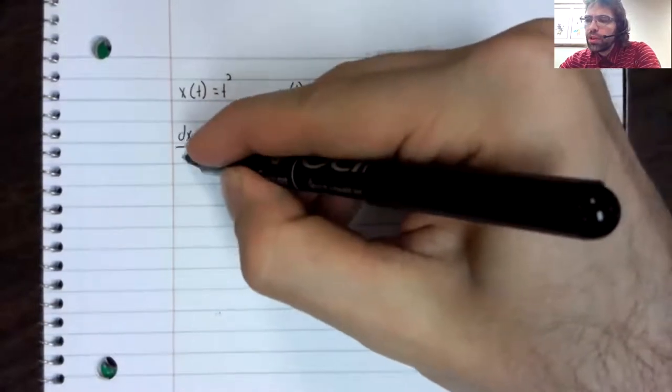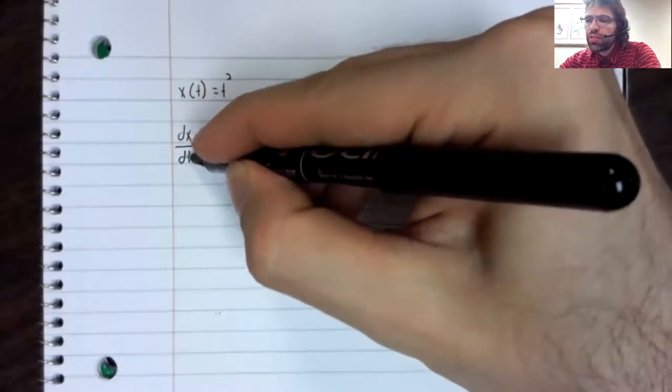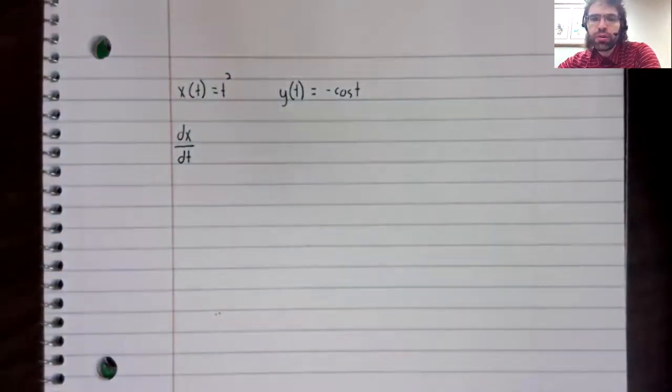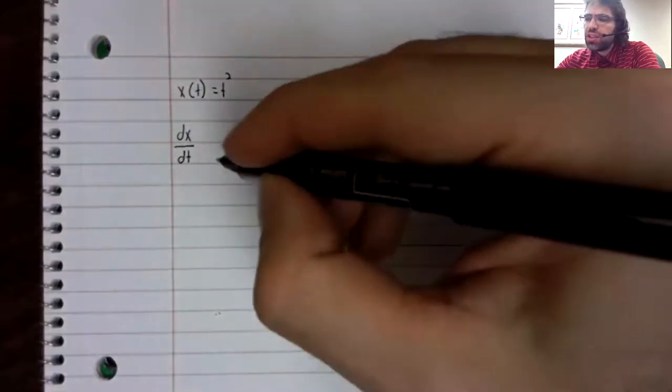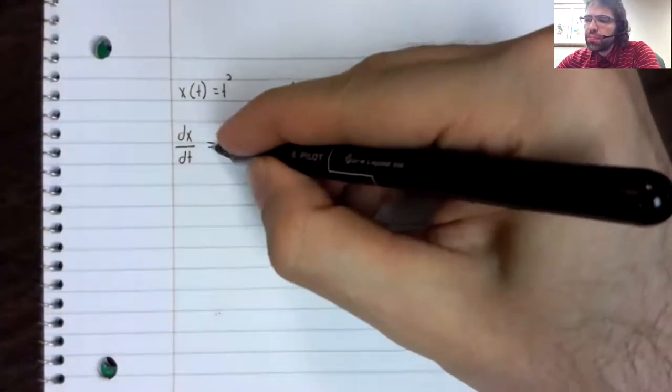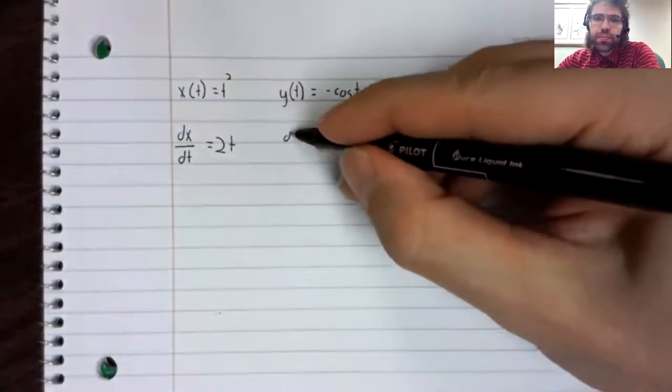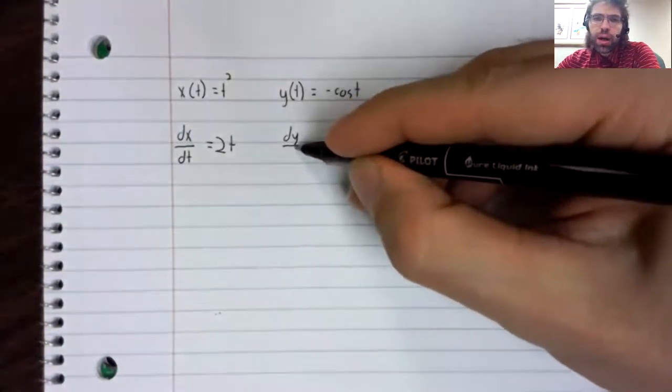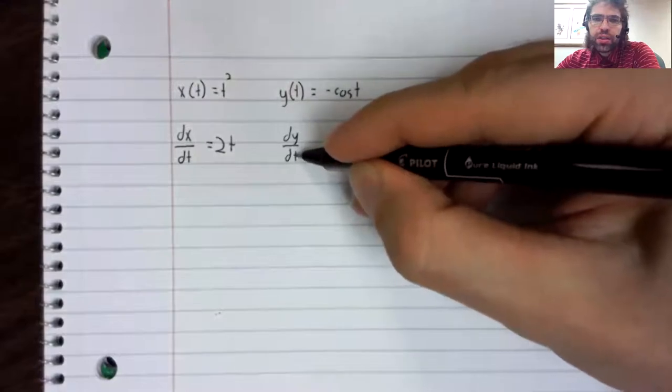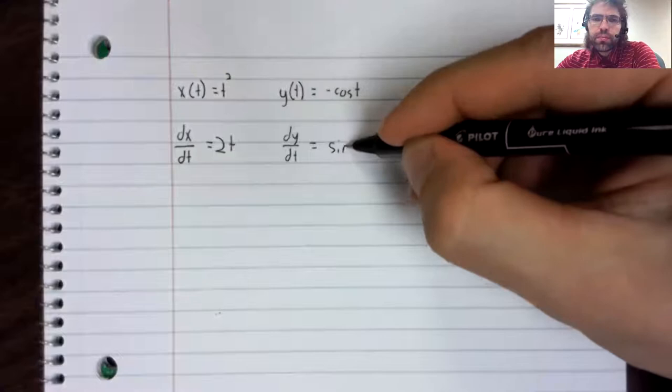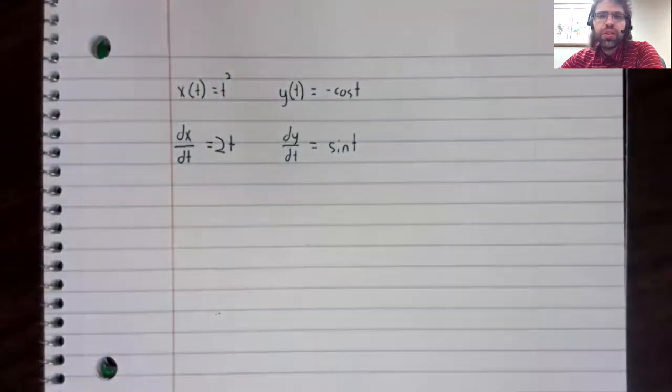And when you find these derivatives, they're with respect to the parameter. dx/dt equals 2t, dy/dt equals the sine of t.